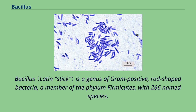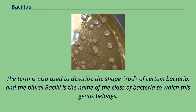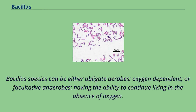Bacillus is a genus of gram-positive, rod-shaped bacteria, a member of the phylum Firmicutes, with 266 named species. The term is also used to describe the shape of certain bacteria, and the plural bacilli is the name of the class of bacteria to which this genus belongs.